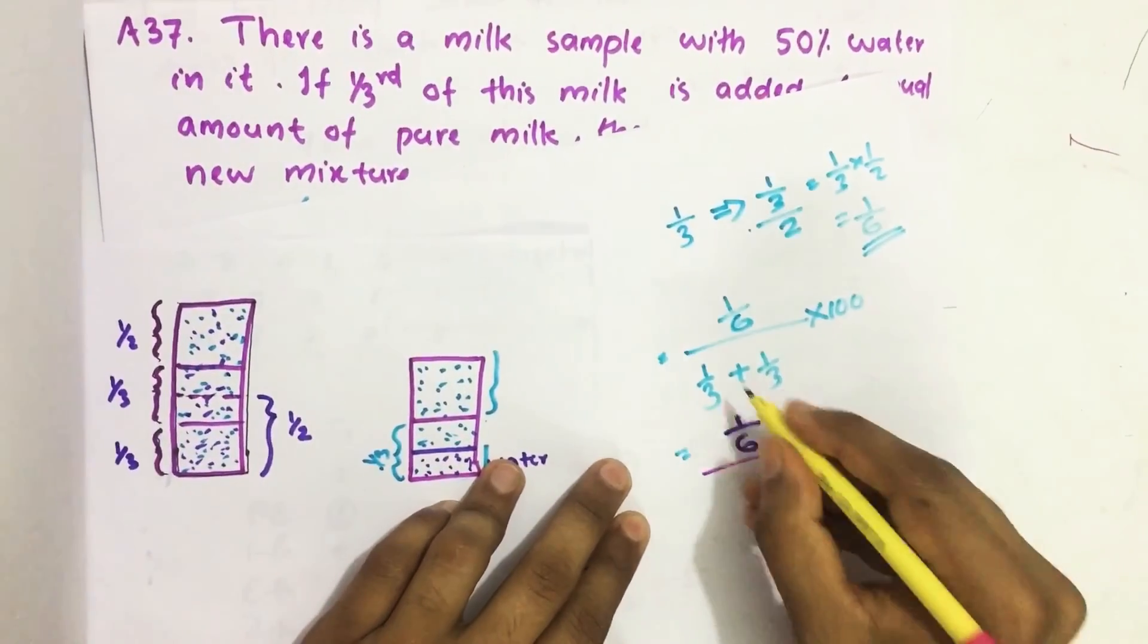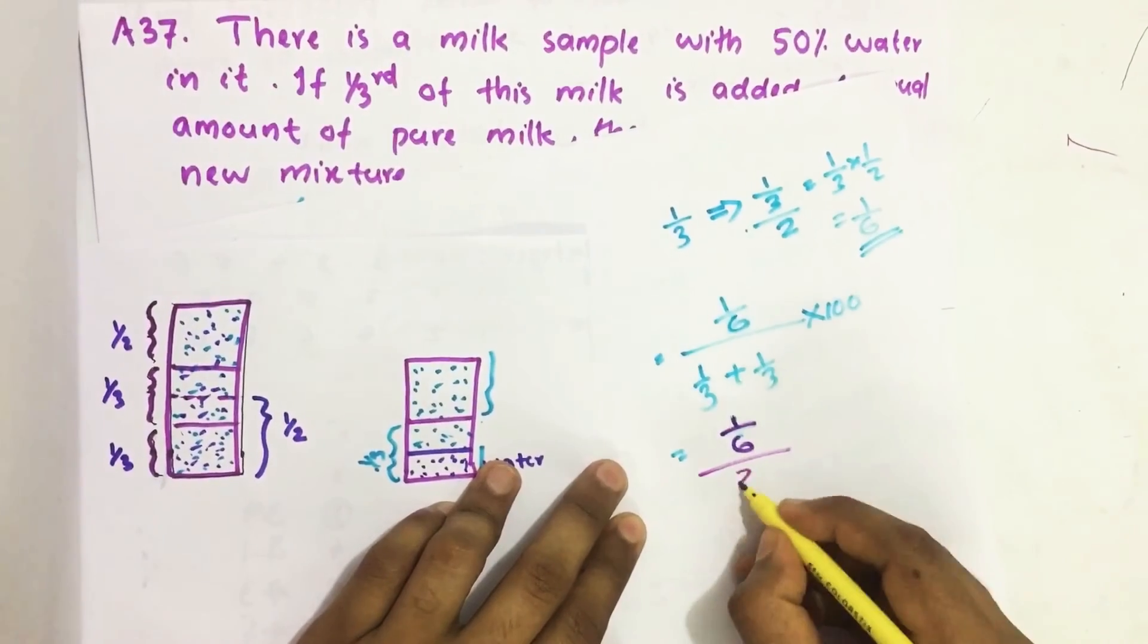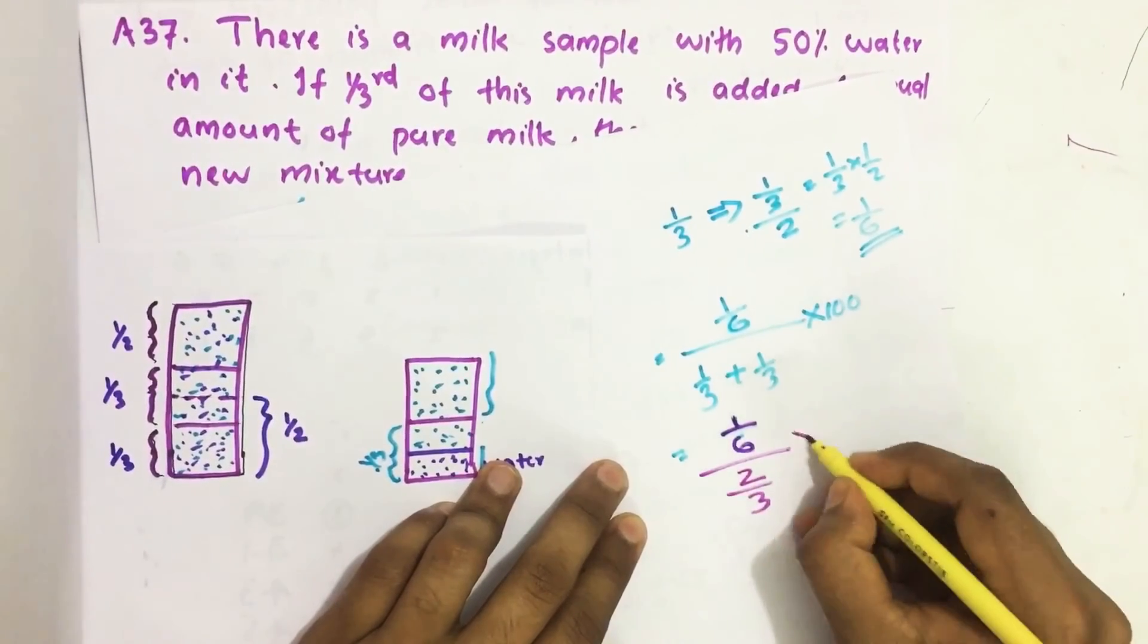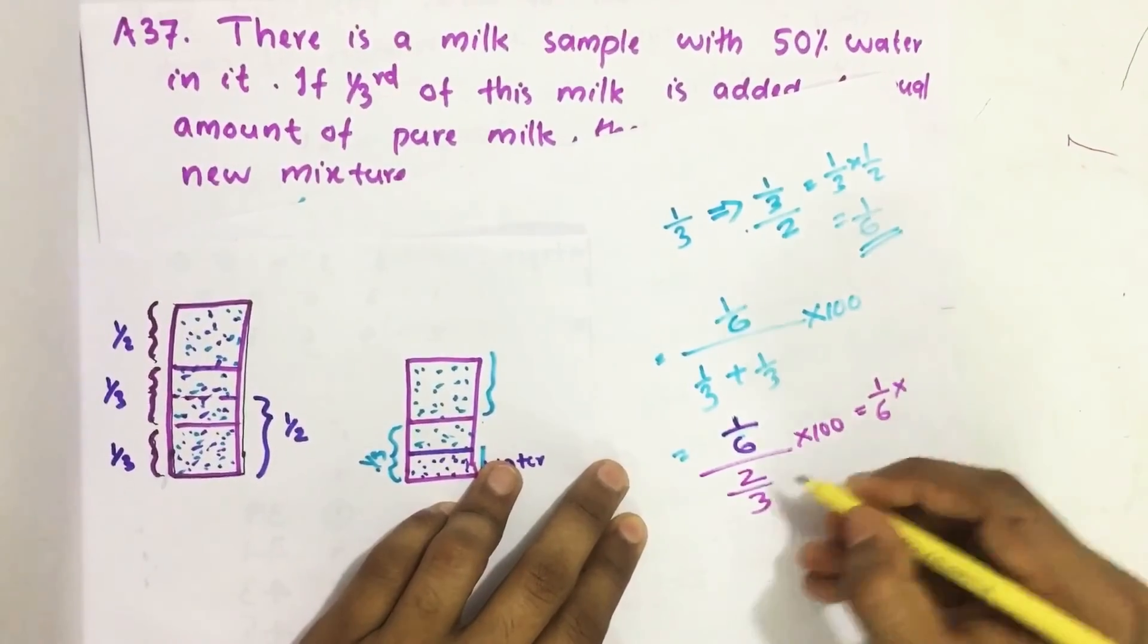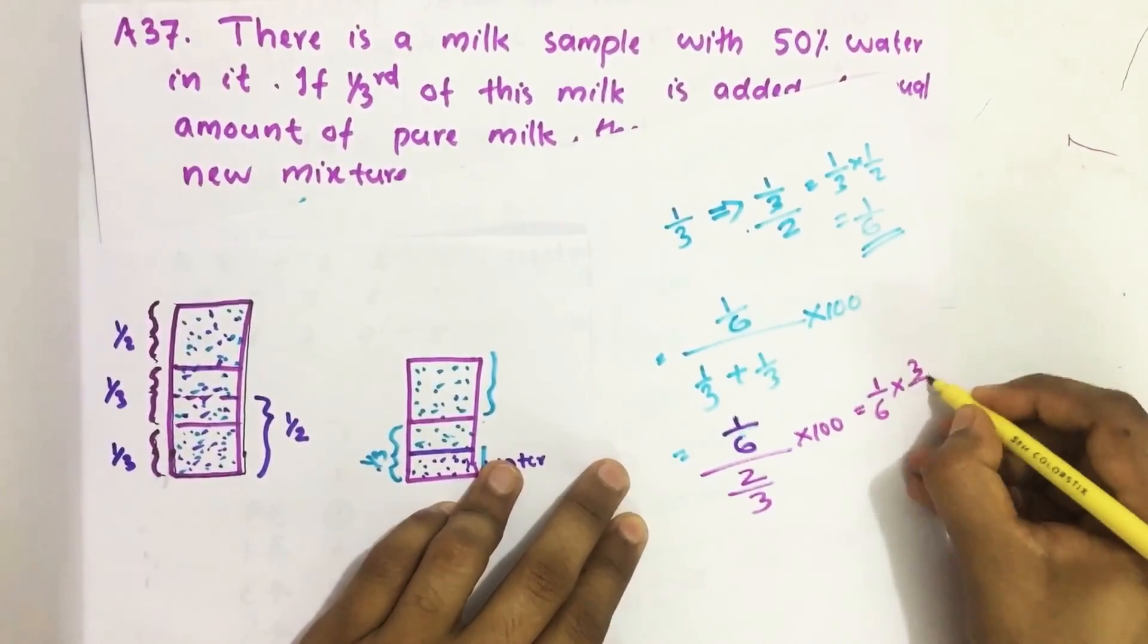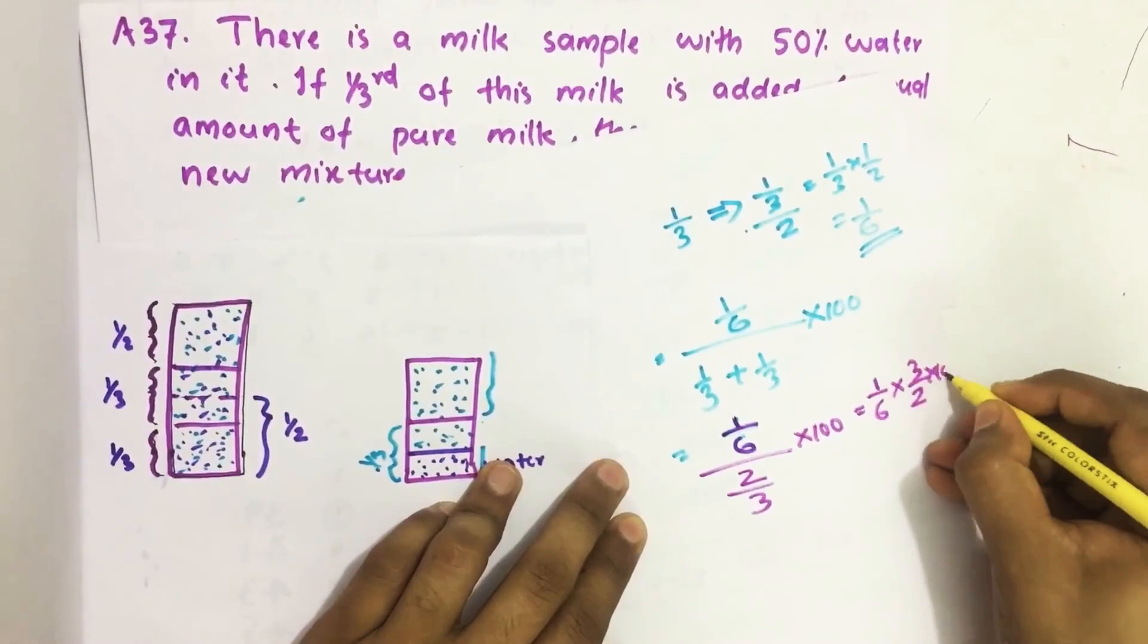One by six divided by one by three plus one by three, we get two by three into 100. This is one by six into two by three. It becomes three by two into 100.